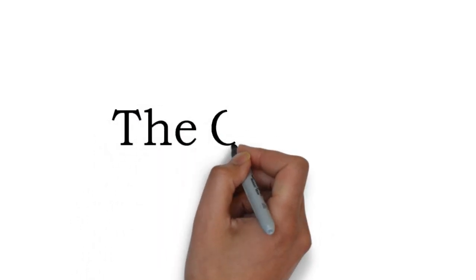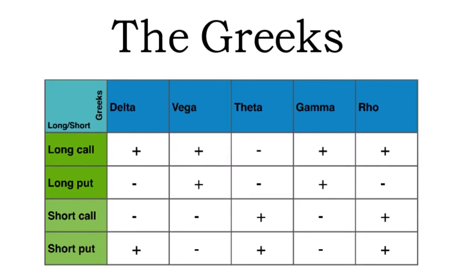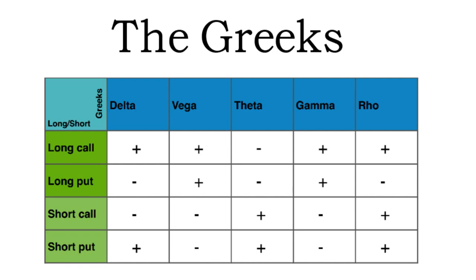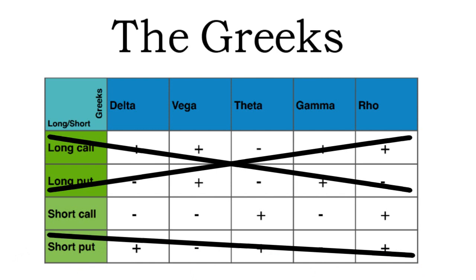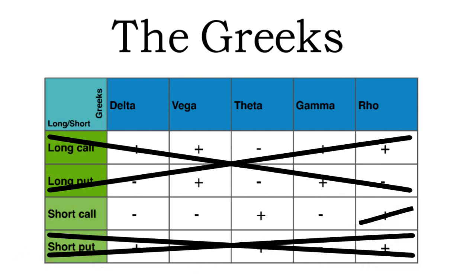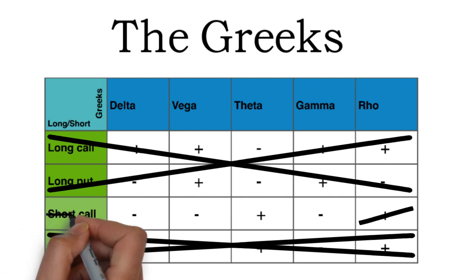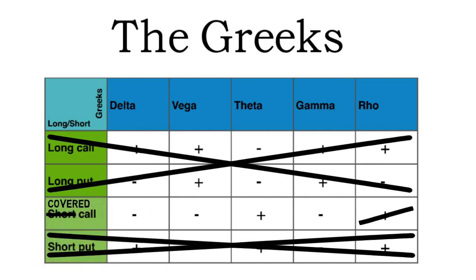Now let me move on to presenting the Greeks of a covered call position. As a covered call only consists of a short call when it comes to options, we can disregard the long call, long put, and short put rows of this table. The delta of a short call position is negative; however, the delta of a long stock position is very positive. This means the net delta of a covered call position with the stock is positive. In other words, you still hope for an increase in the underlying asset's price, just not as big an increase as you would without the covered call on it.